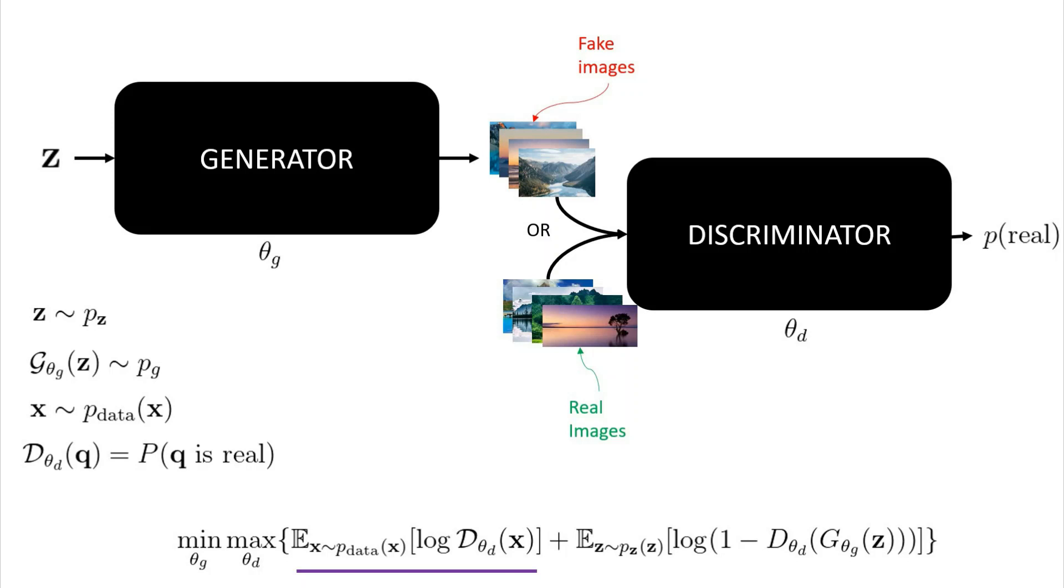To really be a good discriminator, we also wanted to output a low probability for fake images. This is achieved by maximizing the second term, where GZ is the fake image. Again, we take an expectation over all fake images, so the discriminator performs well for any fake image. Since the fake image comes deterministically from Z, we can take our expectation over Z drawn from our defined PZ distribution. So far, we know that we can optimize our parameters theta D to maximize this expression, so that we get a well-trained discriminator.